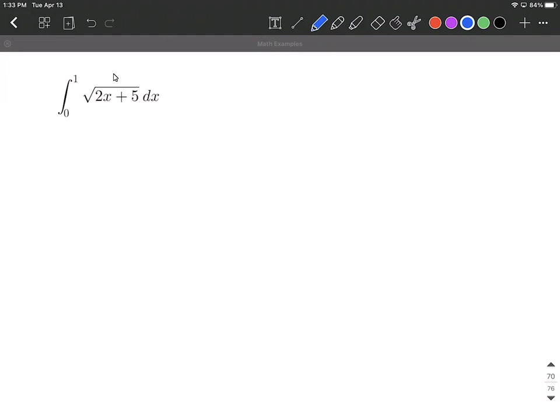So on this one, we have a function inside of another function. That's indicating that we're gonna need to use u substitution. So let's let u equal the inner function, the two x plus five, because that's all underneath the square root.